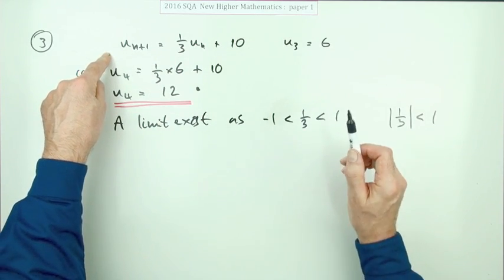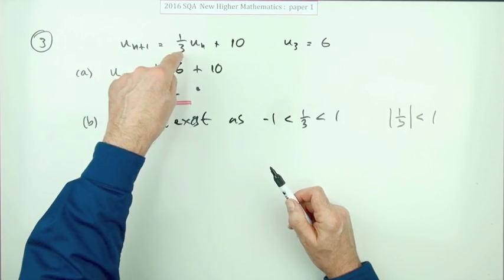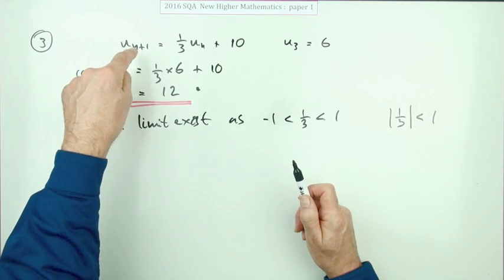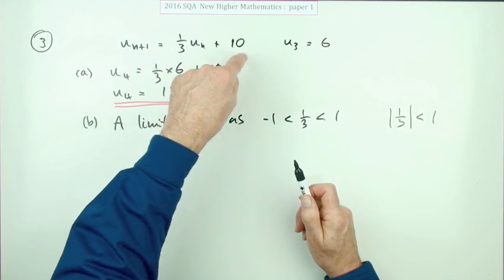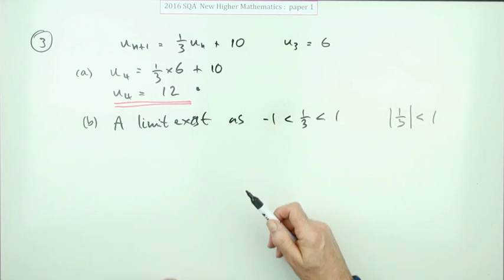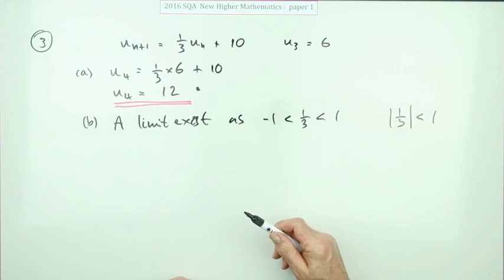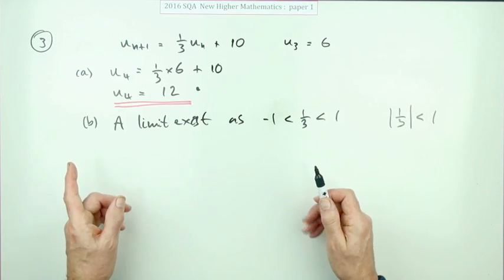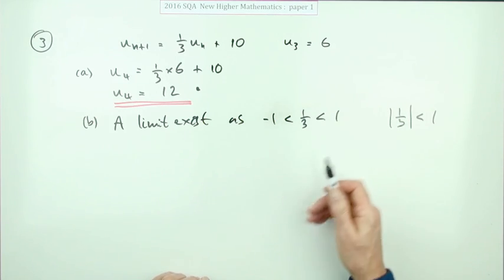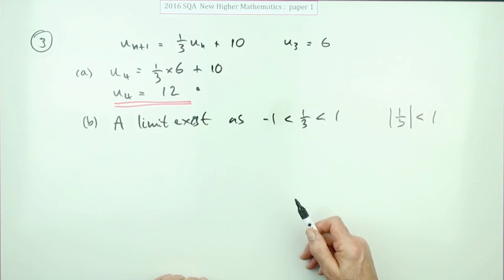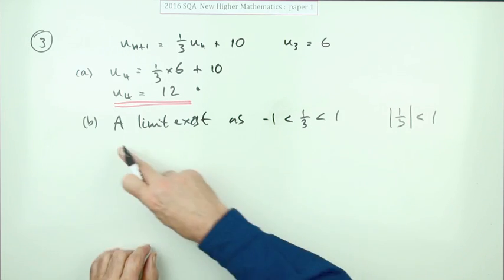This recurrence relation is actually called a linear recurrence relation because it takes a linear form. It's like the equation of a line, y equals mx plus c. But that's the only type you do in the Higher. But there are plenty of other forms of recurrence relations. And what it's suggesting here is, since it says in the marking scheme 'on this occasion,' that means in future occasions that wouldn't be sufficient.